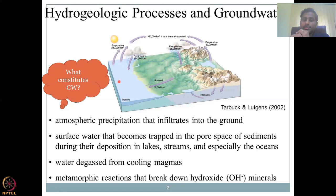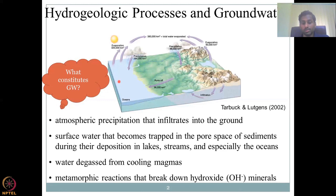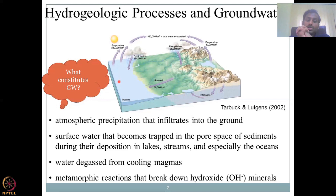Surface water that becomes trapped in the pore space of sediments during deposition in lakes, streams, and especially the oceans is also a source for groundwater. For example, suppose you have a lake — suddenly it can be trapped by some debris, such as erosion depositing sand on top of the lake. Your water is pushed down or gets locked in the system. Once locked, it cannot move anywhere; it either rejoins other groundwater sources through further pressure or stays as a perched water table. Water that degases from cooling magmas — when lava flows as a hot molten material — can also degas, and water is a byproduct. That water can be stored in rocks and sediment as a groundwater source.